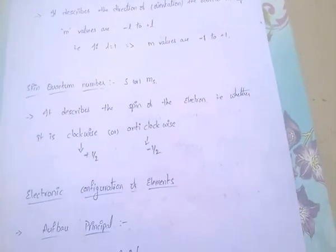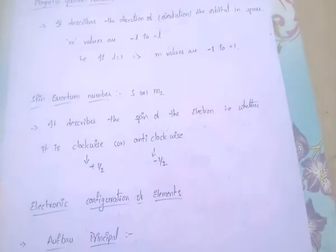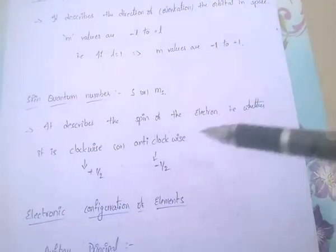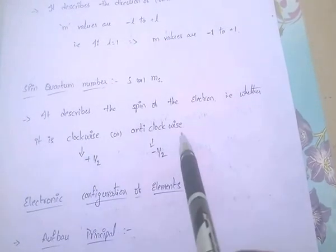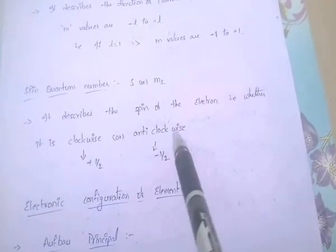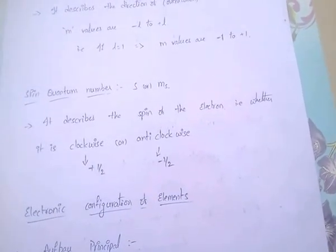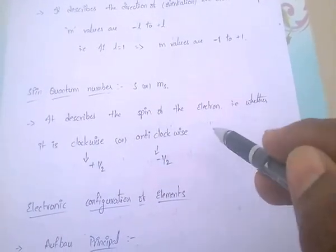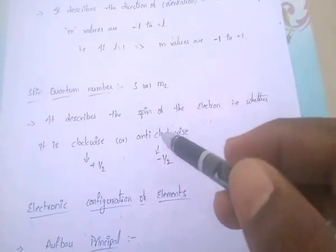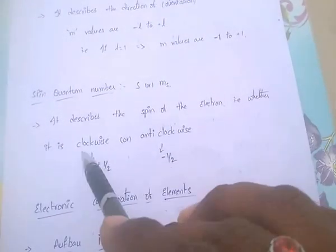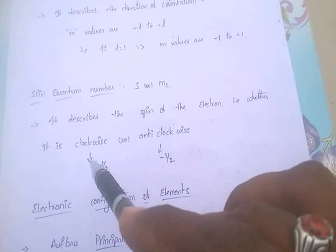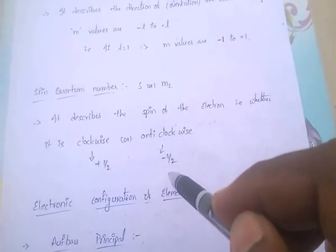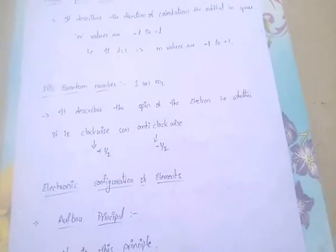Next, Spin Quantum Number. It is denoted by s or ms. This spin quantum number describes the spin of the electron — that is, whether it is clockwise or anticlockwise. If it is clockwise, the value is plus 1/2. If it is anticlockwise, it is minus 1/2.